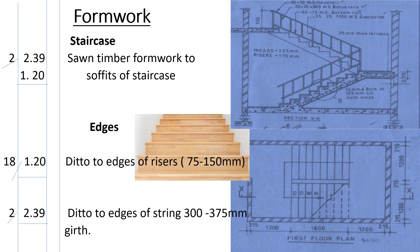Now we move to the riser edges. These are the risers here — the timber boards placed at each riser face so concrete can be poured against them. We have nine risers per flight and two flights, so 9 times 2 equals 18 risers. The width of each riser board is 1200 millimeters. We book this as: 1.2 multiplied by 18, described as edges to risers, 75 to 150 millimeters cut.